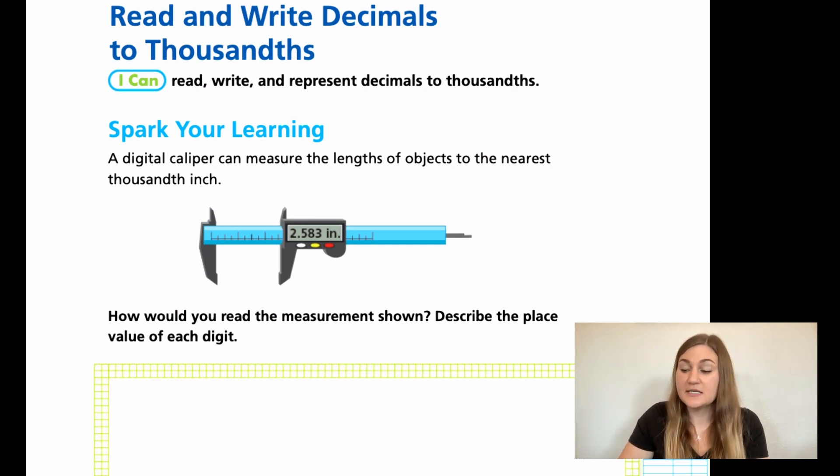So most people would just say 2.583. The proper way to say this is 2 and - that decimal place says and. Then you would read the whole three-digit number as a whole. So it would be 583. And then you would say the place value that it ends in. That 3 is in the thousandths place. So we would say it 2 and 583 thousandths.